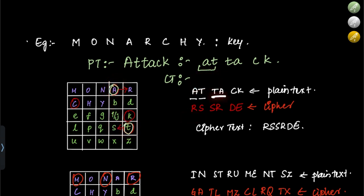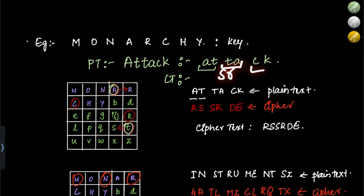Next pair is T and A. T is here, A is here — again different row and column. By the same rule, for T we get S and for A we get R. So TA encrypts to SR.